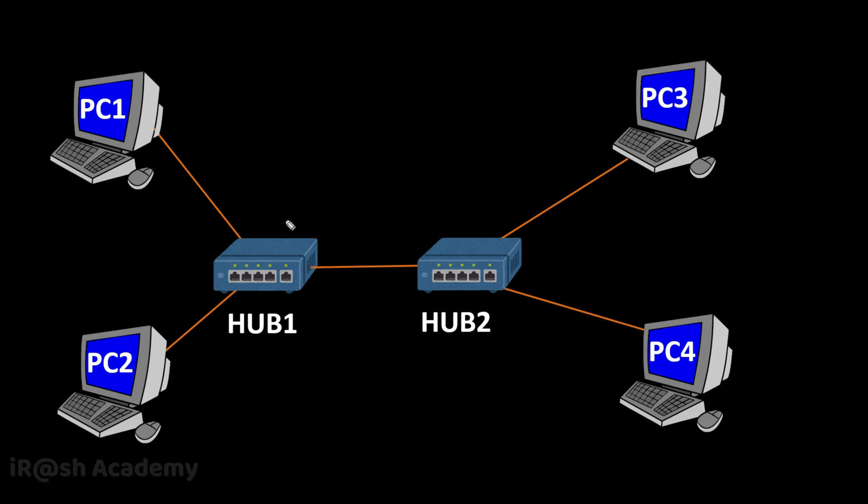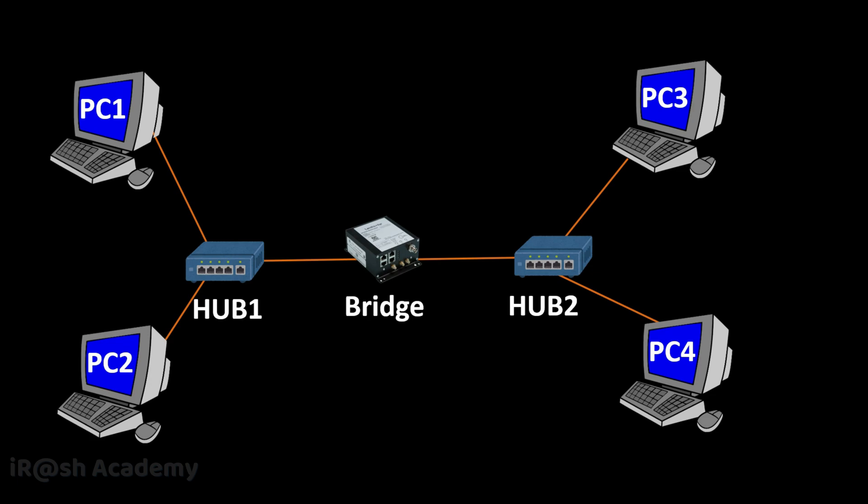In this scenario with two network hubs, both share a single collision domain divided among PC1, PC2, PC3, and PC4. What if we could divide this single collision domain into two? This is the beauty of LAN separation with a network bridge. We introduce one network bridge between Hub 1 and Hub 2. The main function of the network bridge here is to separate the collision domain.